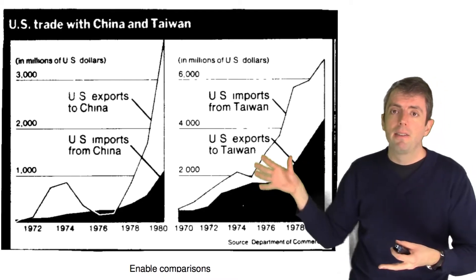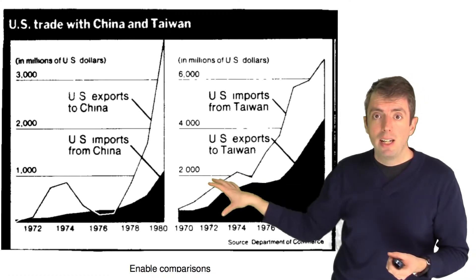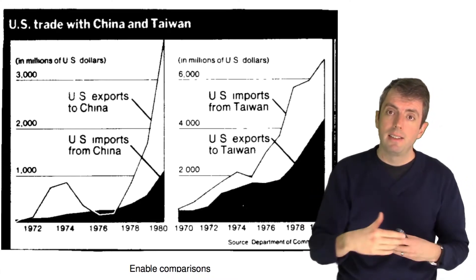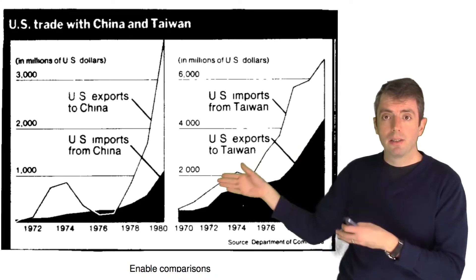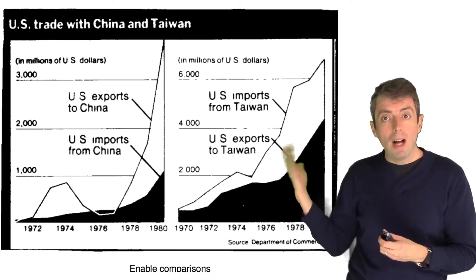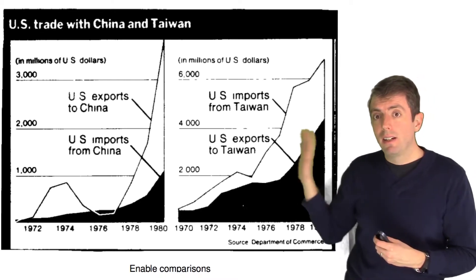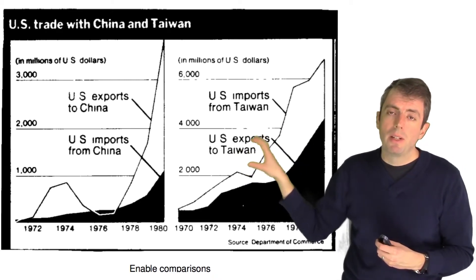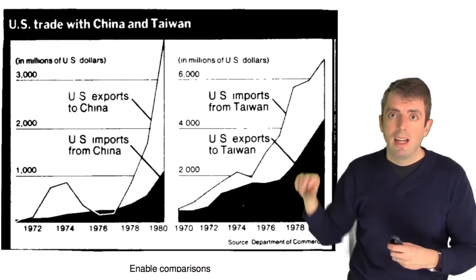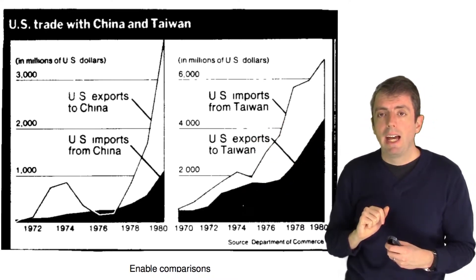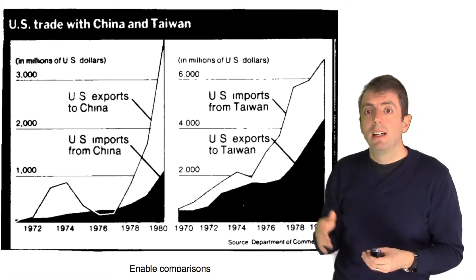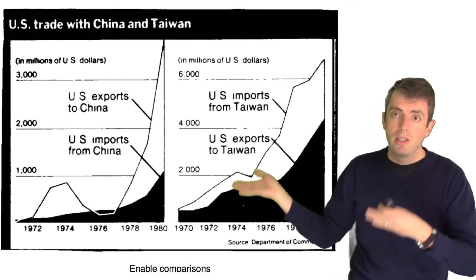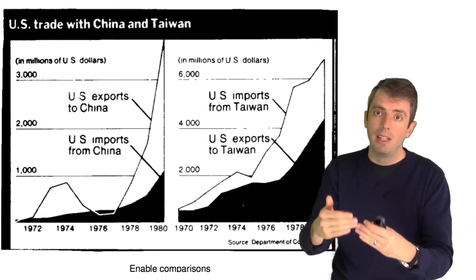Here you have a graphic trying to show that trade between China and Taiwan is different than trade between China and the United States. But what makes this really difficult is that the colors are inconsistent from one side to another, and the y-axes are not comparable. There is some valuable information here, but this visualization doesn't help you get there. You need to translate the y-axis, flip the colors, and then you can understand what's going on. If anything, this visualization hurts you in trying to reach the right conclusion about the difference between trade between China and the U.S. and trade between Taiwan and the U.S.